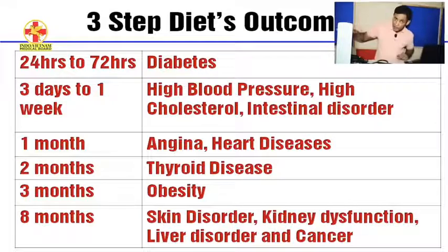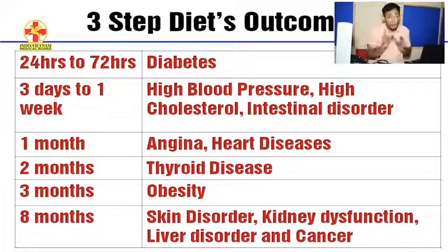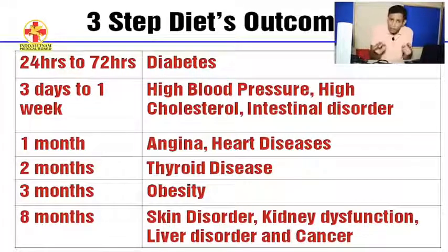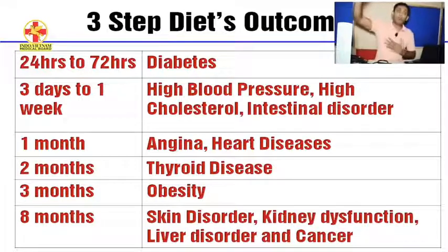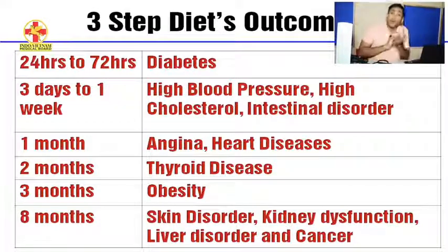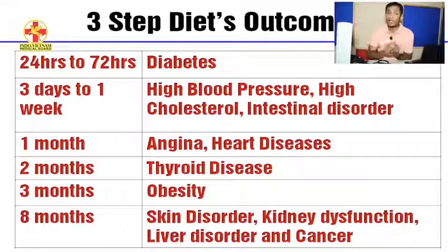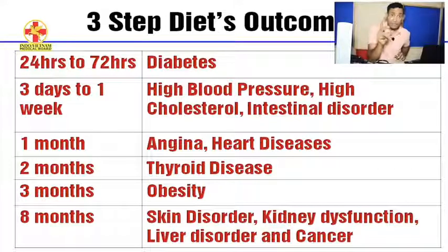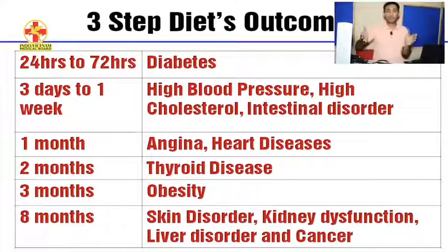Within the first seven days your blood pressure will start reducing, and you will need to reduce your blood pressure medication accordingly. Within one month your angina — the pain in the chest — will almost end. When you climb three floors, you won't need to stop. The abnormal heart sounds, the abnormal gaset sound, will also not come. So within the first one month your angina, heart disease symptoms, and abnormal heart sounds will vanish.